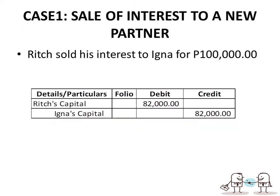Case 1 — Sale of interest to a new outside partner: Rich sells his interest to Igna for $100,000. The entry is: debit Rich's Capital $82,000, credit Igna's Capital $82,000. The difference of $18,000 goes directly to Rich because the transaction between Rich and Igna is between the two of them only and not with the partnership.